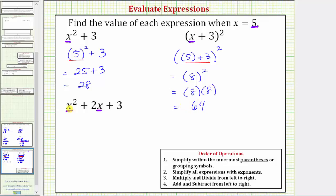The last expression is x squared plus two x plus three. So if x equals five, we have five squared plus two times five plus three. Following the order of operations, we can skip step one because there's nothing to simplify inside the parentheses. Step two, we simplify expressions with exponents. So five squared we know is equal to 25. So this equals 25 plus two times five plus three.